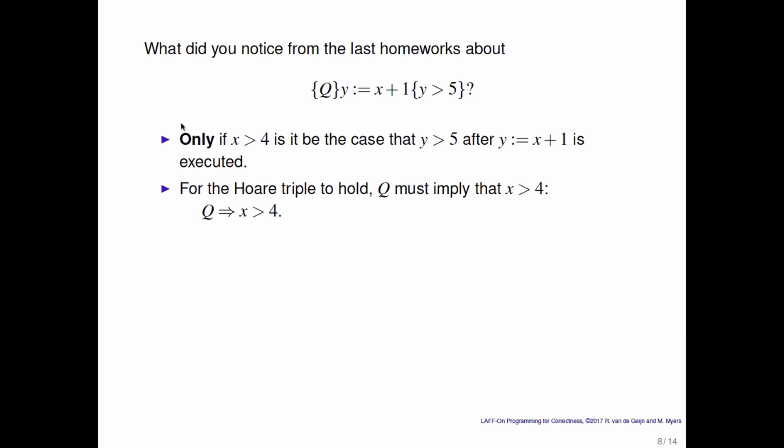So Q must imply x greater than 4. But what do we know about the relationship between Q and the predicate x greater than 4? Well, we know that x is greater than 4 is weaker, or at least as weak as, the predicate Q. That's what it means for Q to imply x is greater than 4.